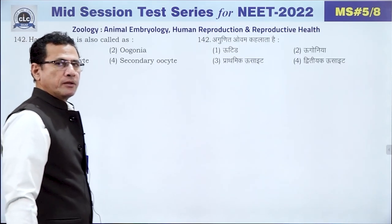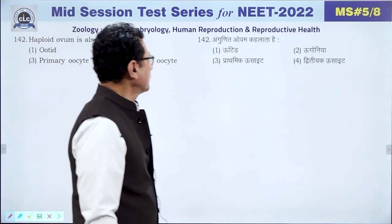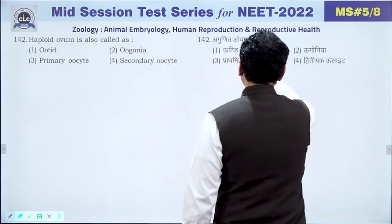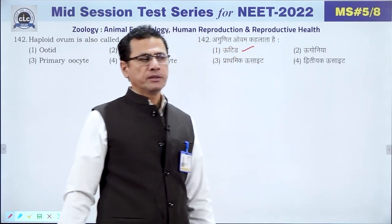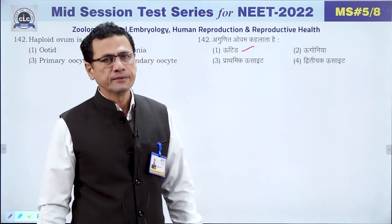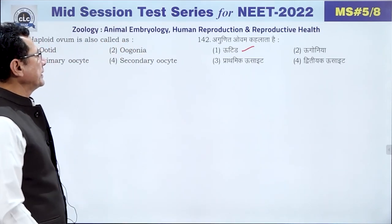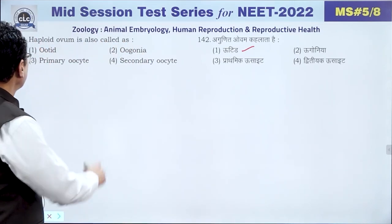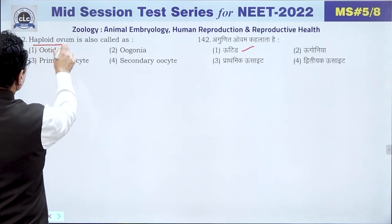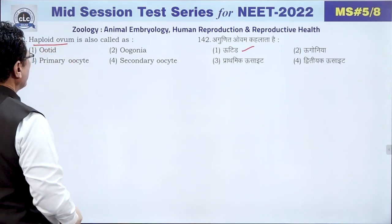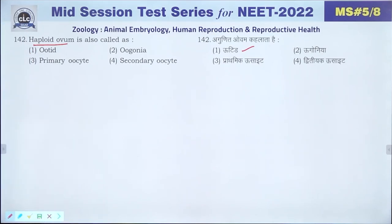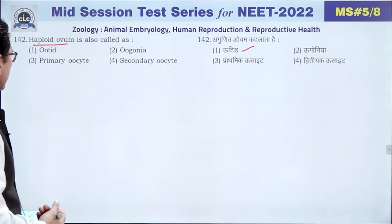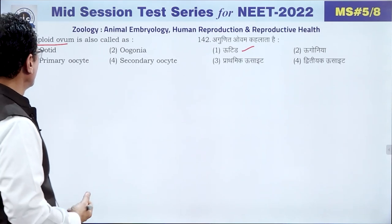Question 142: A haploid ovum (agonit ovum) is called an ootid. It is not an unfertilized ovum. The answer is ootid.